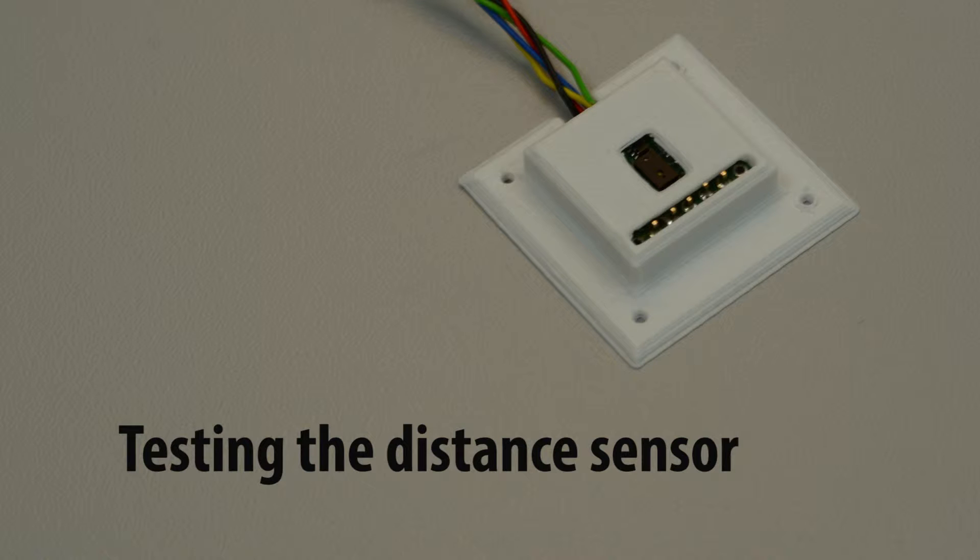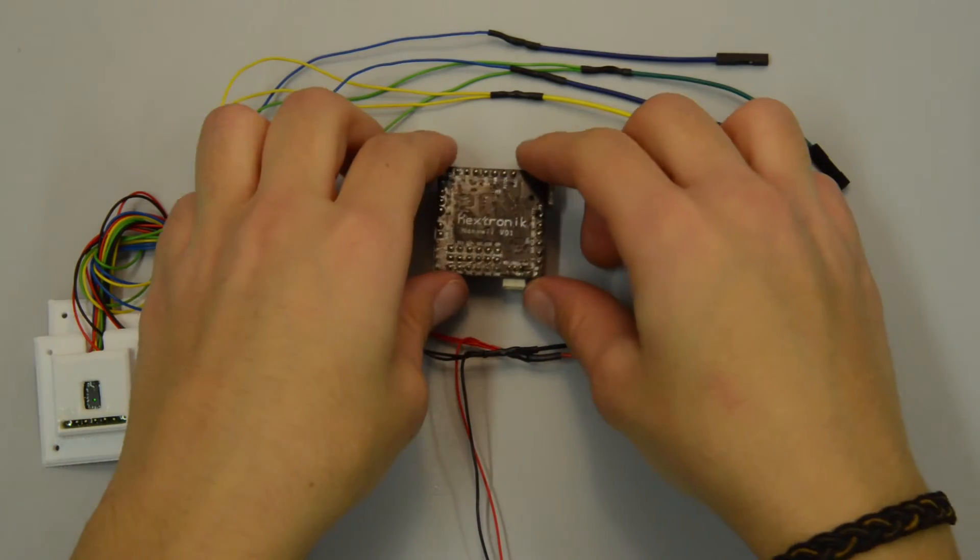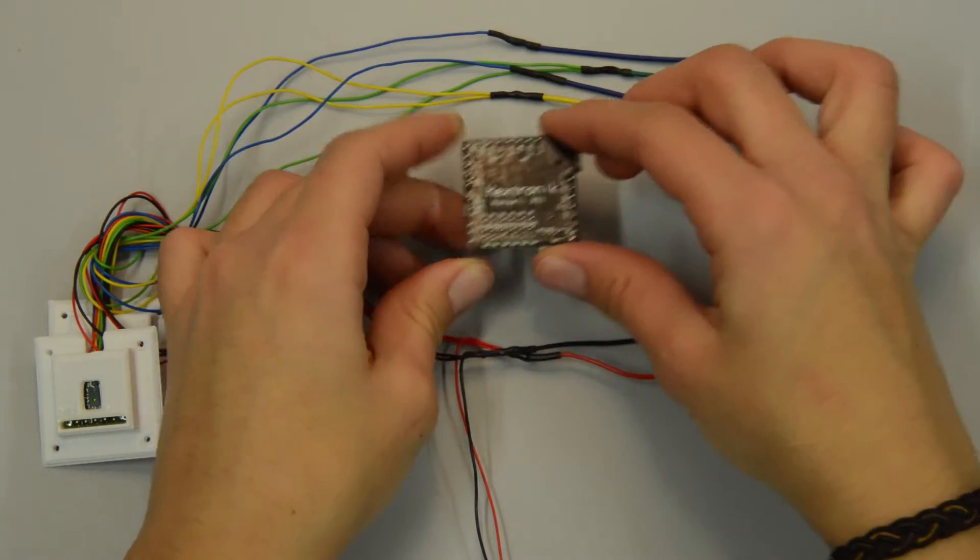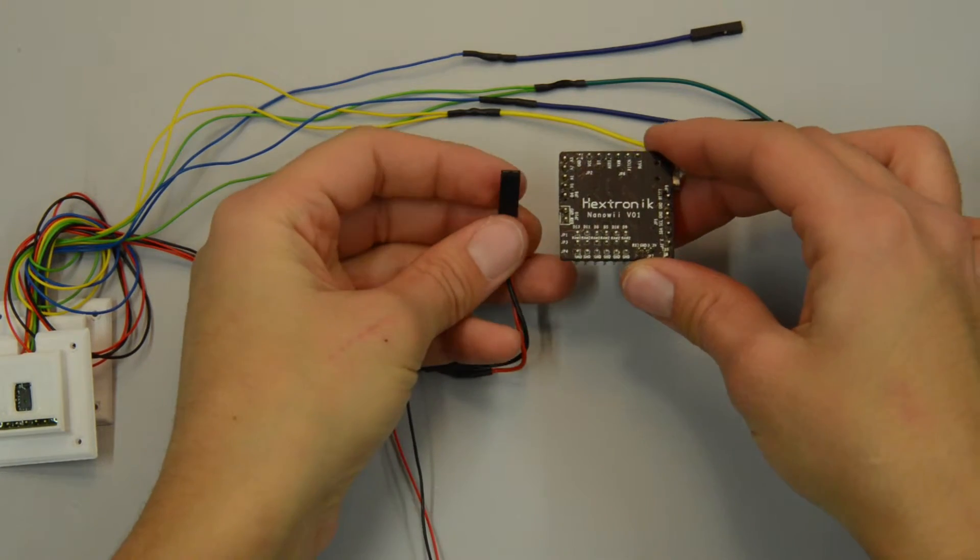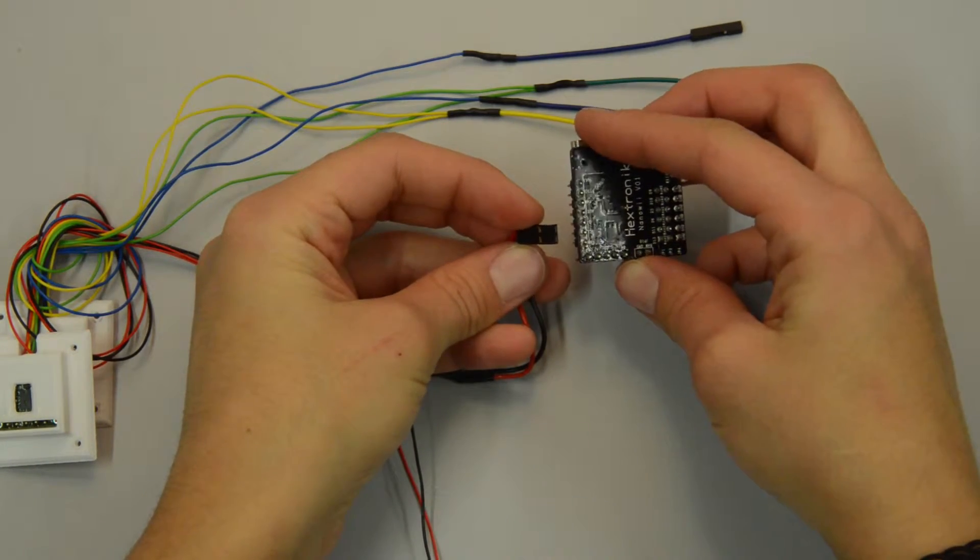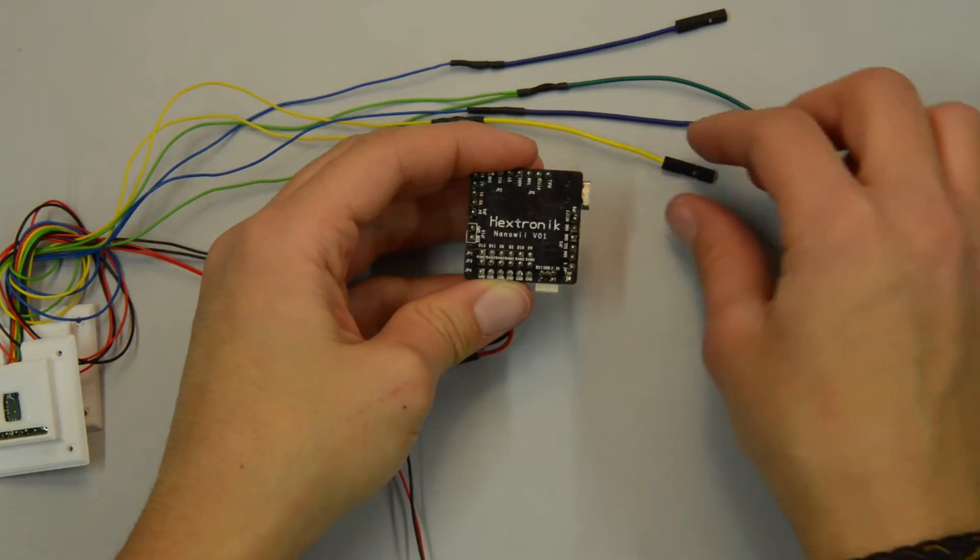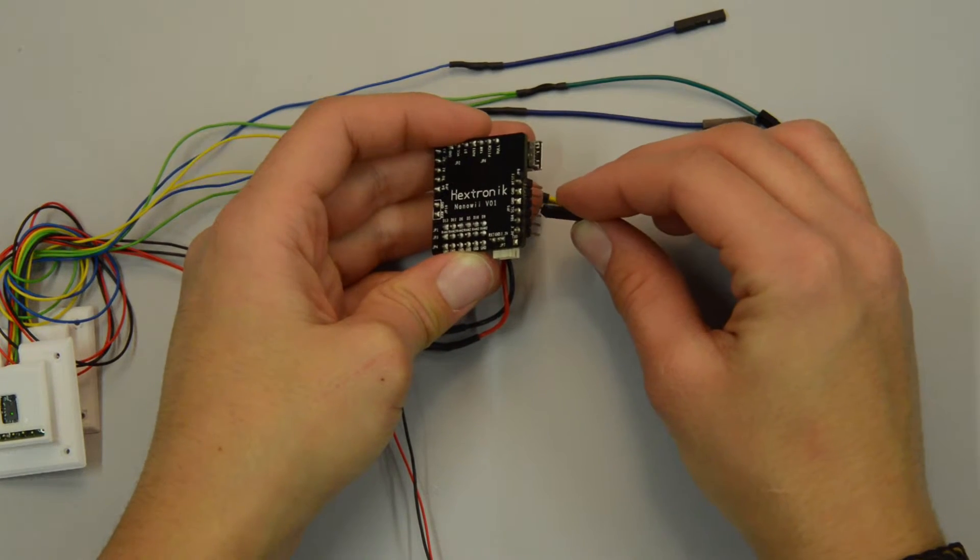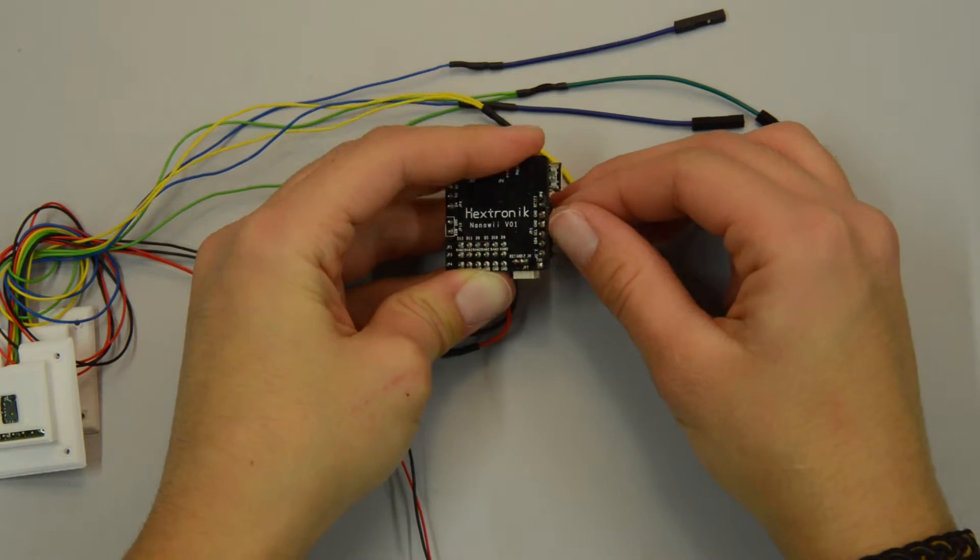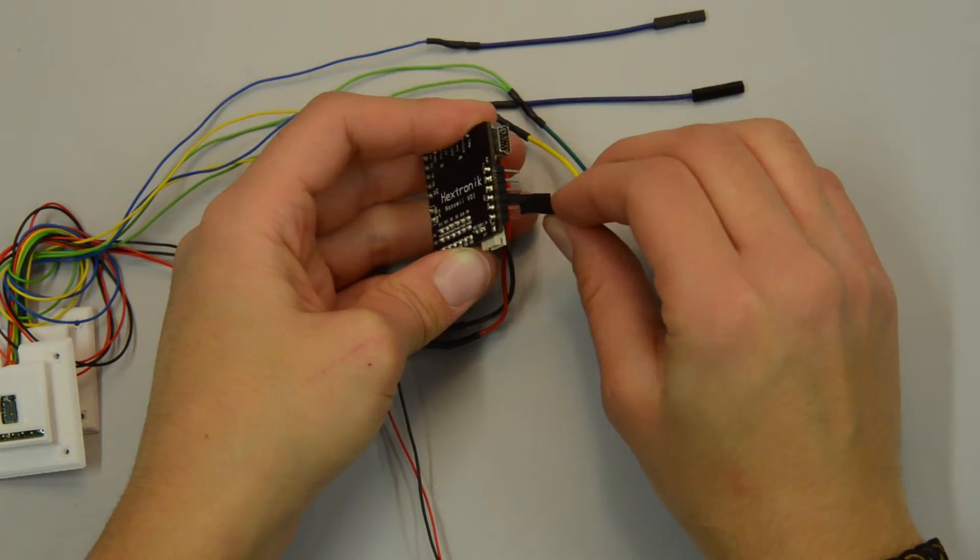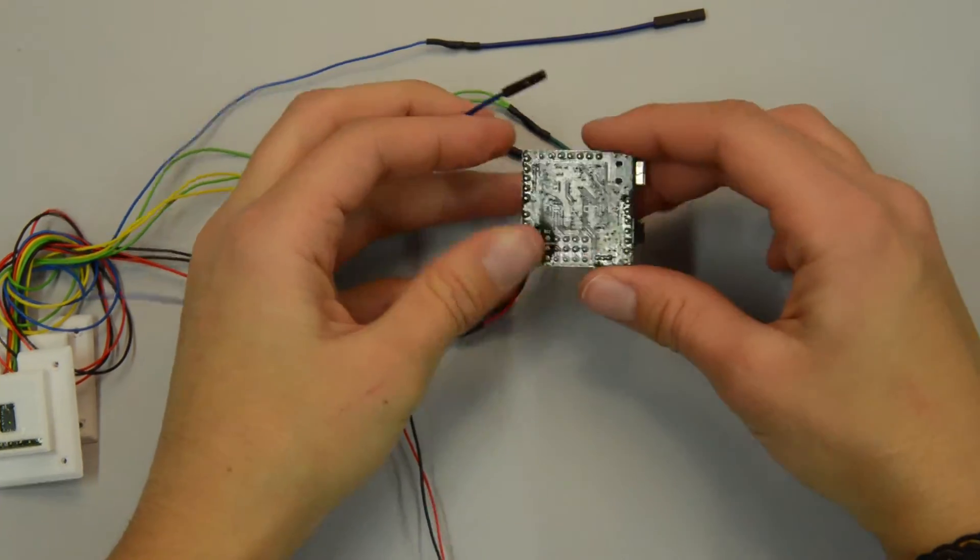For testing the IR sensors, plug the red and black wires onto the VCC and GND pins close to the analog pins. Plug the SDA and SCL wires on the corresponding pins near the opposite corner on the board. Finally, plug the blue wires onto the analog pins.